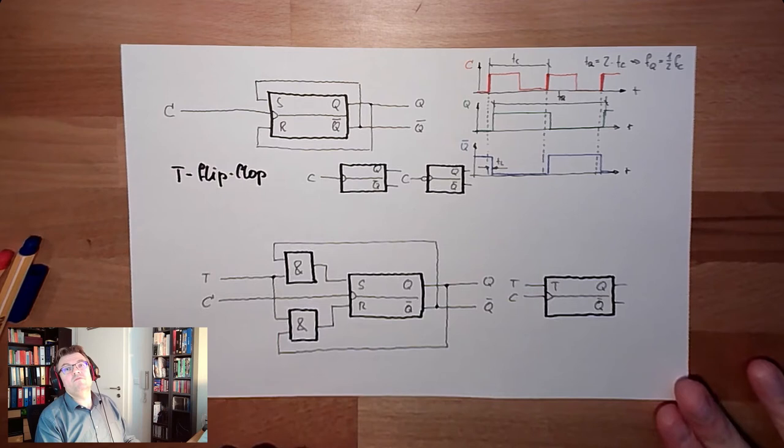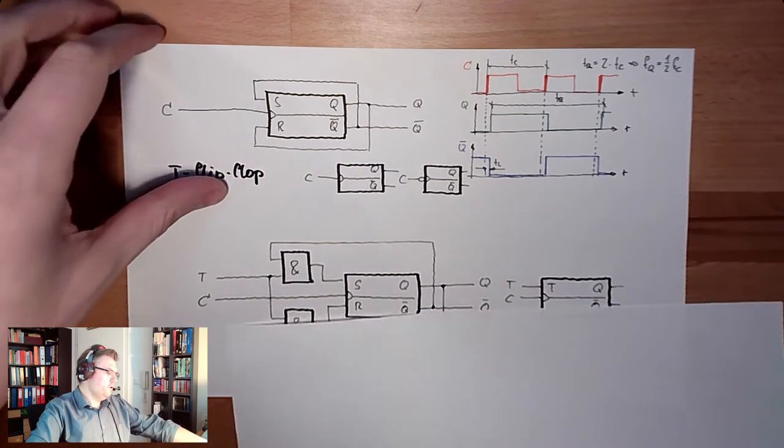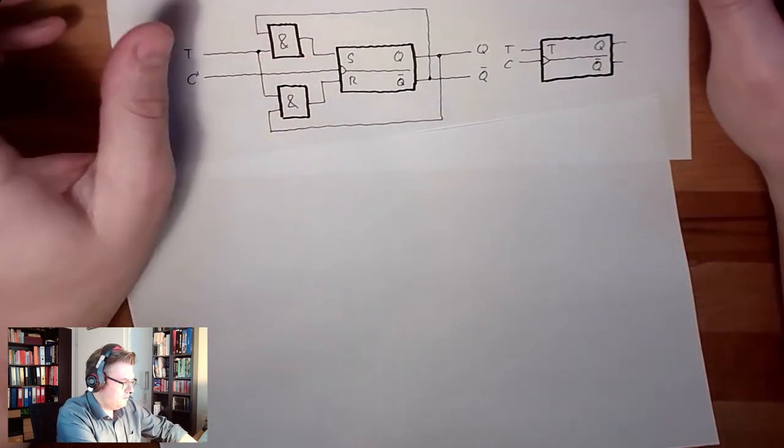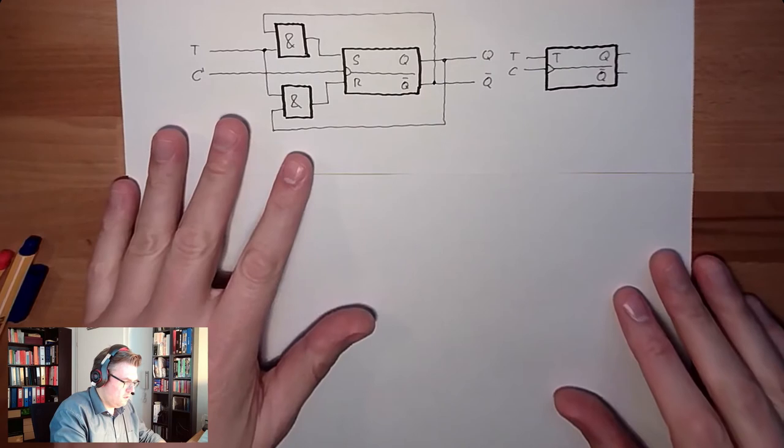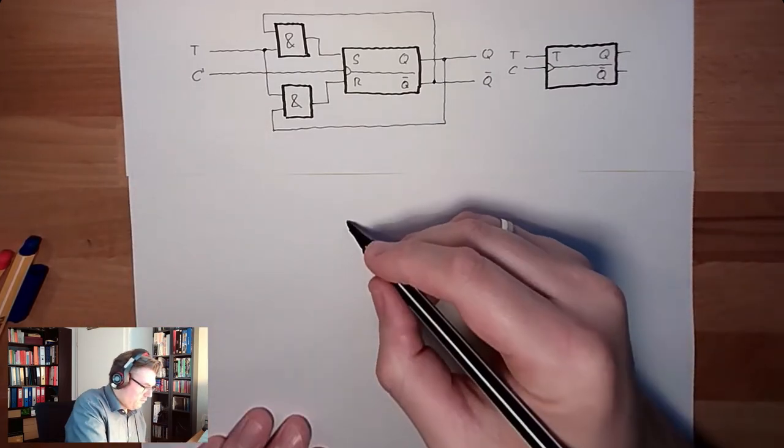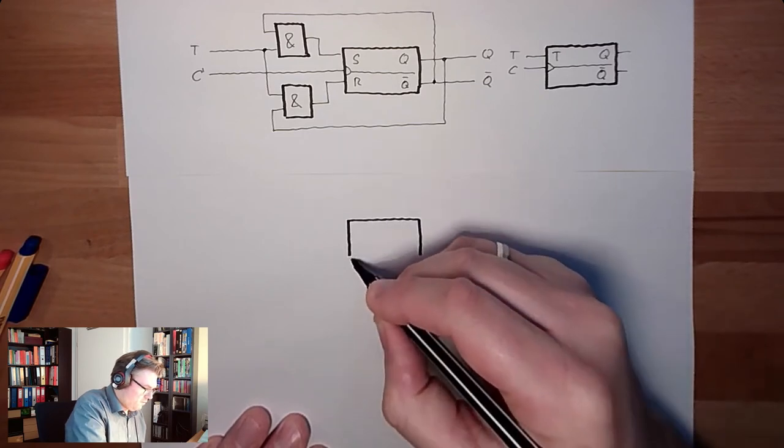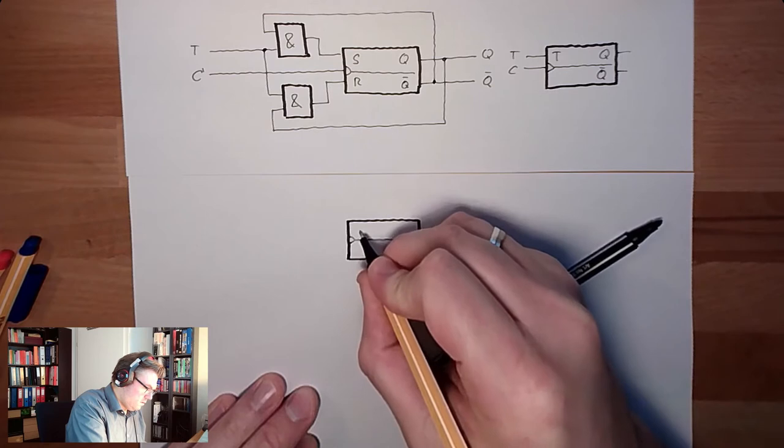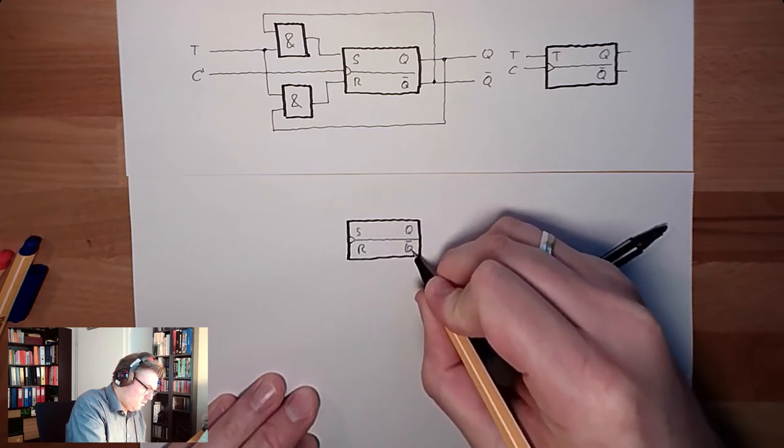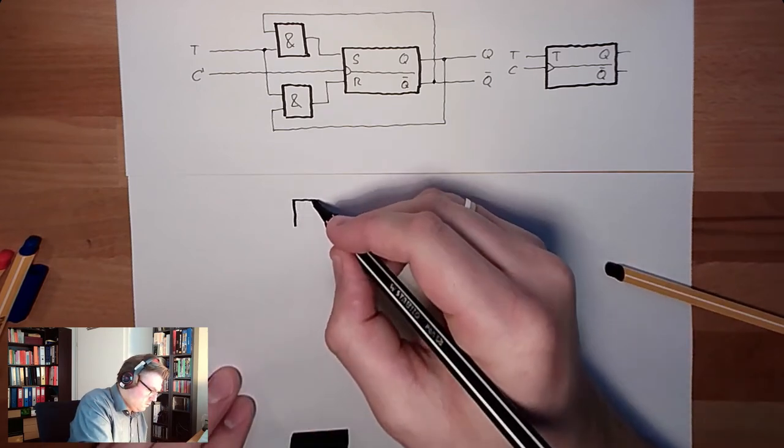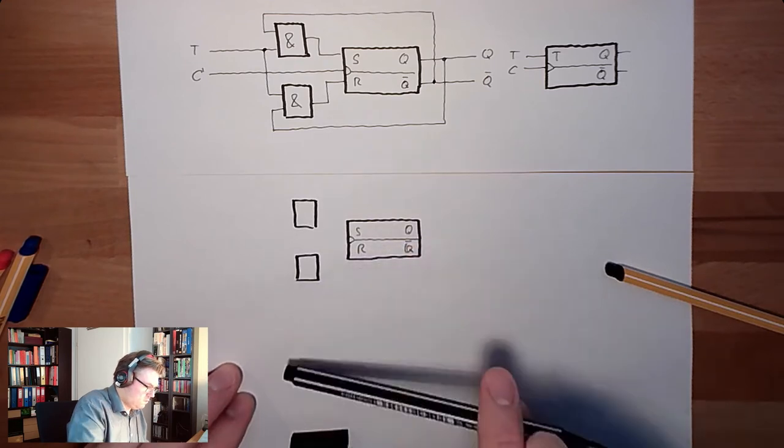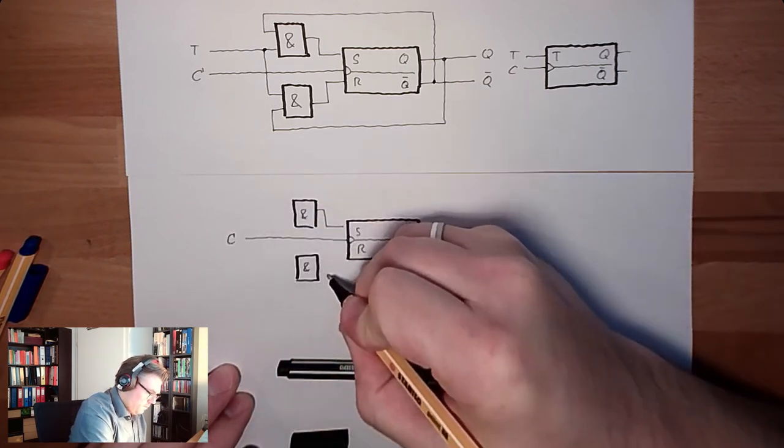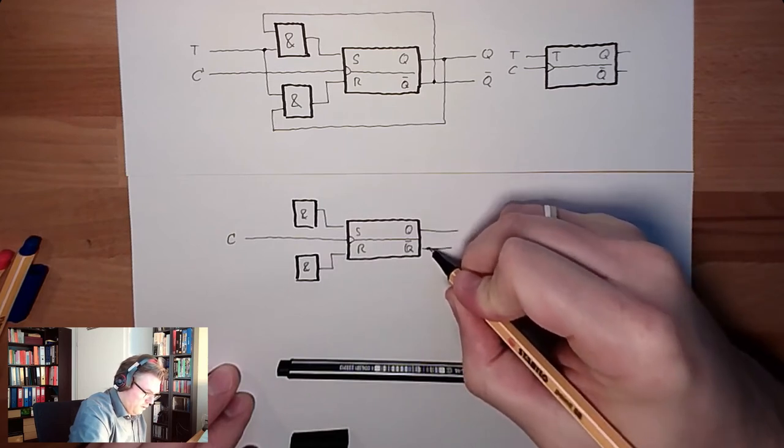Very close related to this T flip-flop is the JK flip-flop. I will also show you. I will leave this here on the top. Bend it here a little bit. So, we will draw it exactly the same way like the toggle T flip-flop. There's the memory. Same thing like that here. S, R, Q, not Q. There are the blockers. So, again, two end elements. There's the clock line. See?